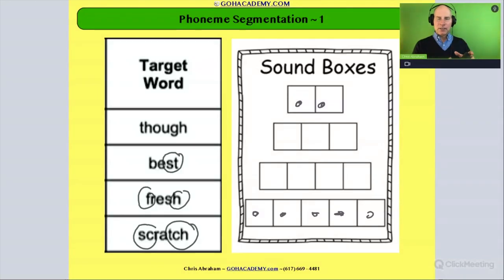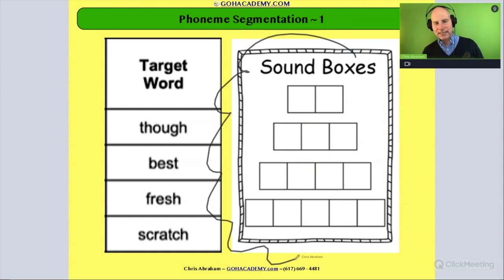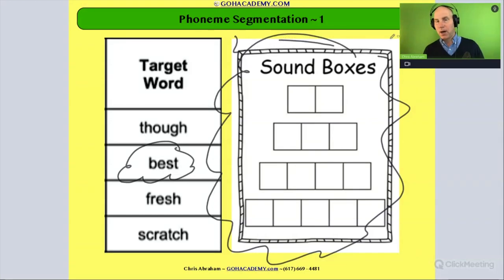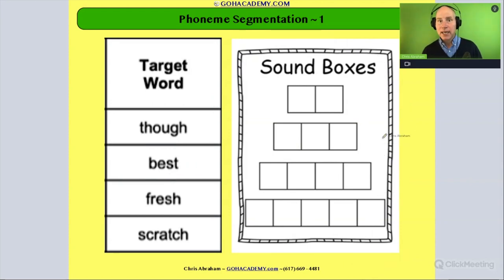Sound boxes and Elkonin boxes are really helpful when you do add in the print, when you do add in letters, because what this becomes is when you add in, when you do a sound box activity and you include the spelling of a word, then you get to practice letter sound correspondence. And this is really helpful for a student that may be decoding and not pronouncing all the sounds in a word. So I'll take a word like scratch, student comes and they're decoding that word. And let's say they decode that word scratch and they omit the R. They just omit it.